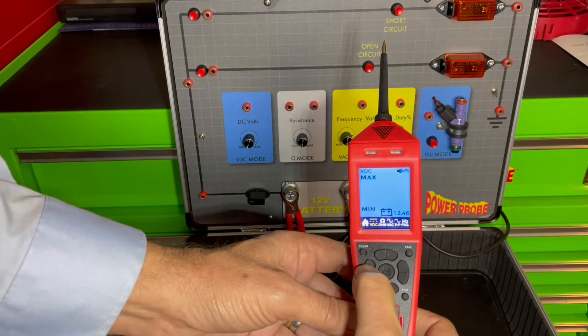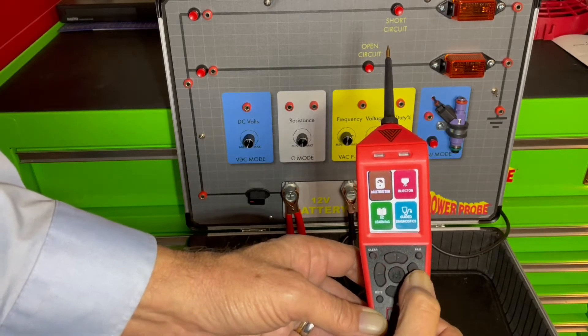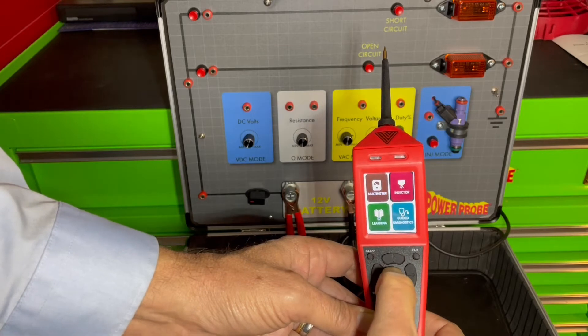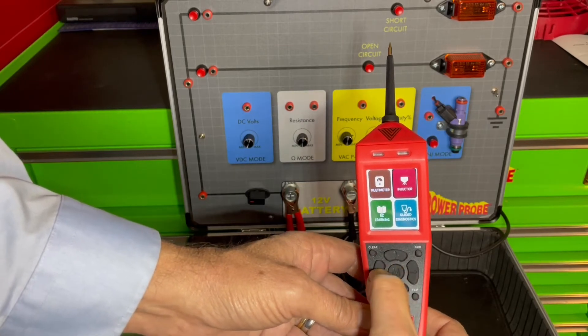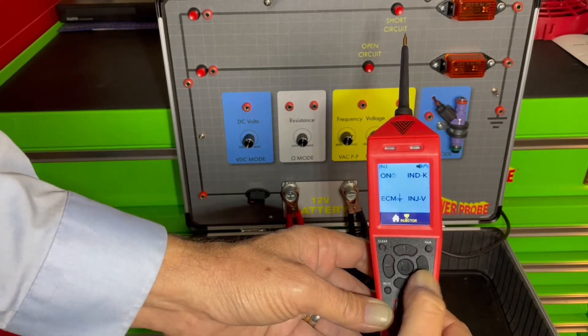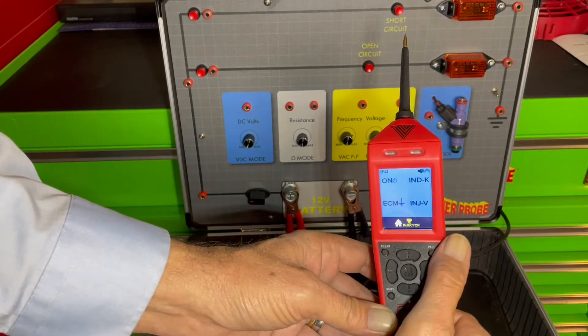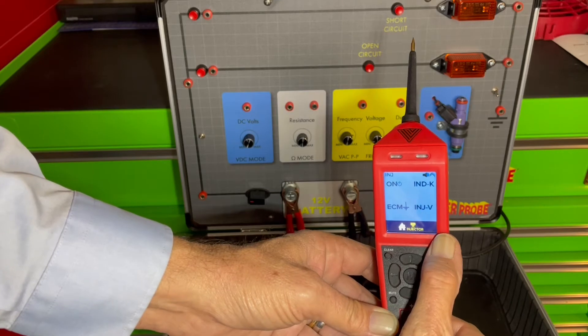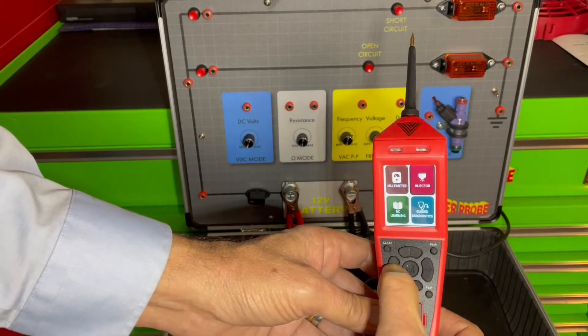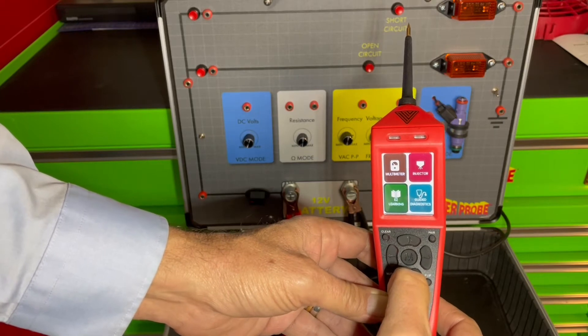This is your fuel injector test mode with the same readings that were in the Power Probe 4: injector on time, ground from the computer or ECM supply, supply voltage to the injector, and inductive kick voltage. Go back to home, you'll also see there is easy learning similar to what is in the Power Probe 3 Easy.